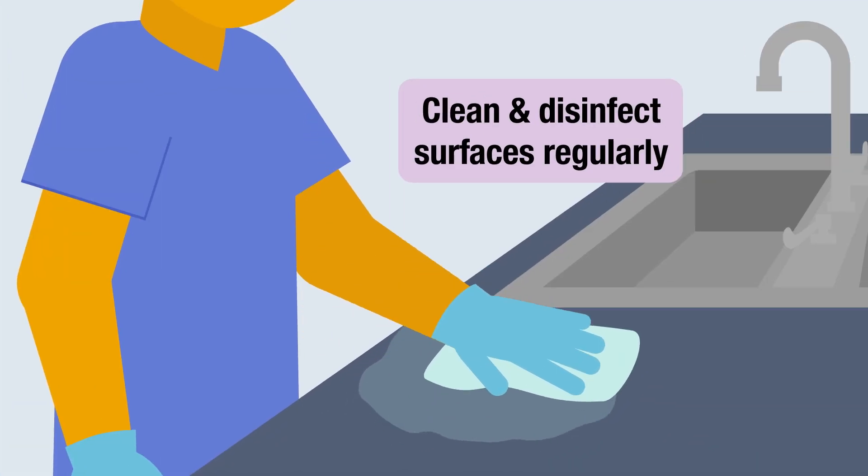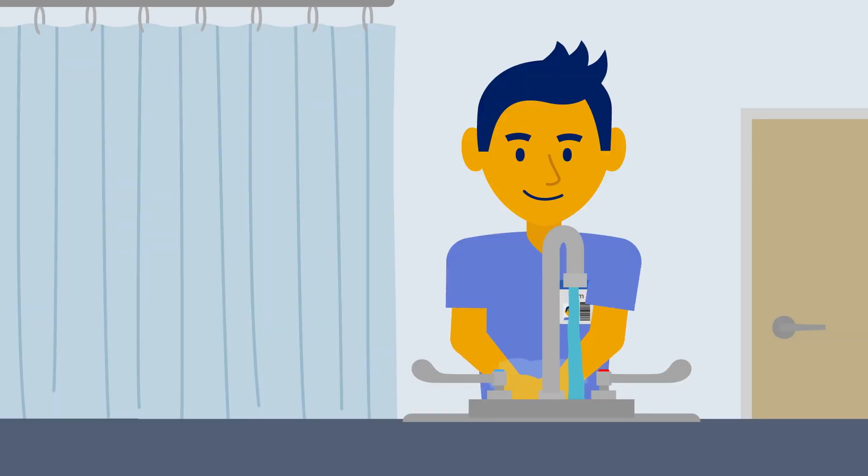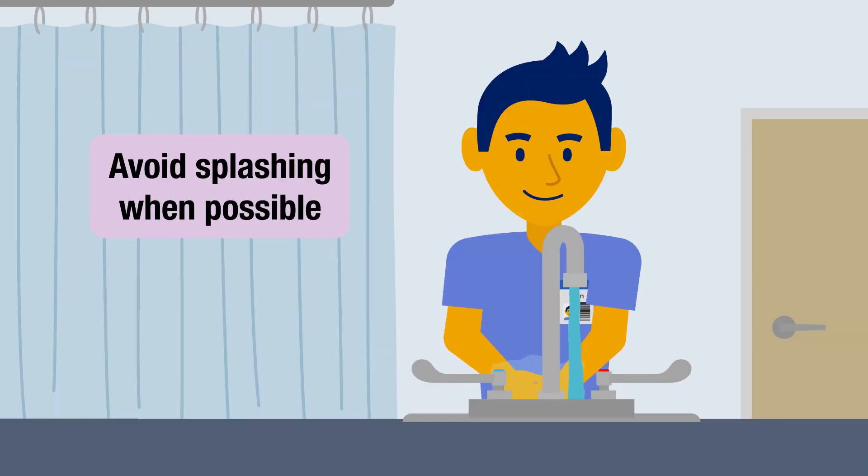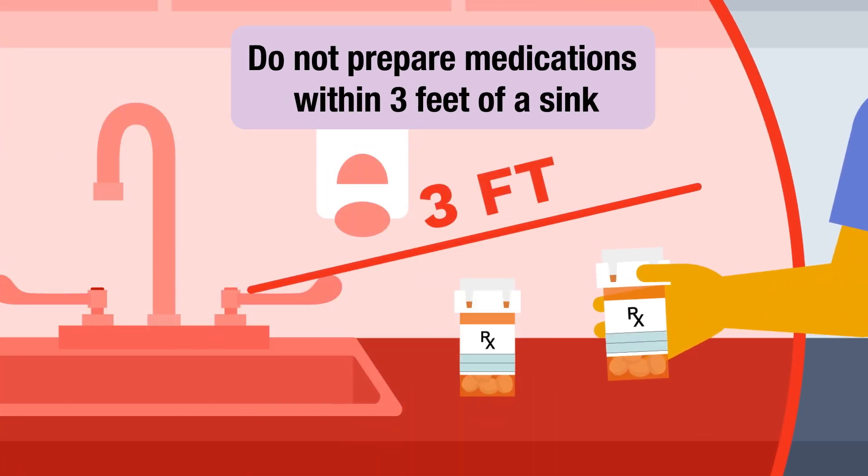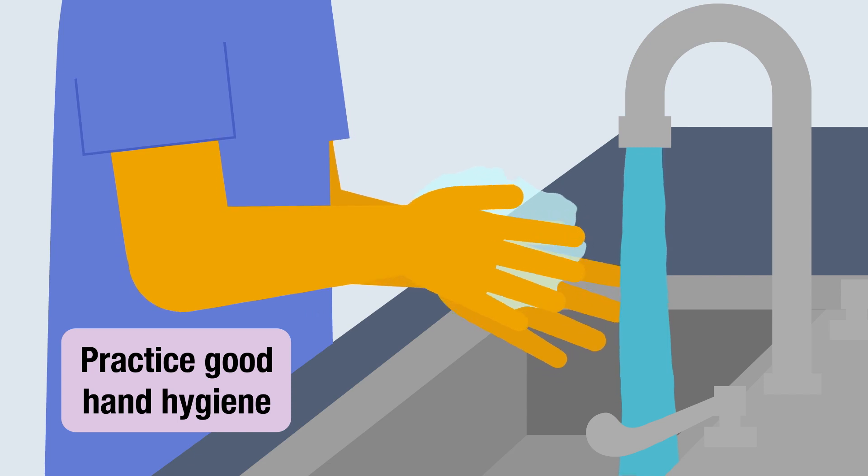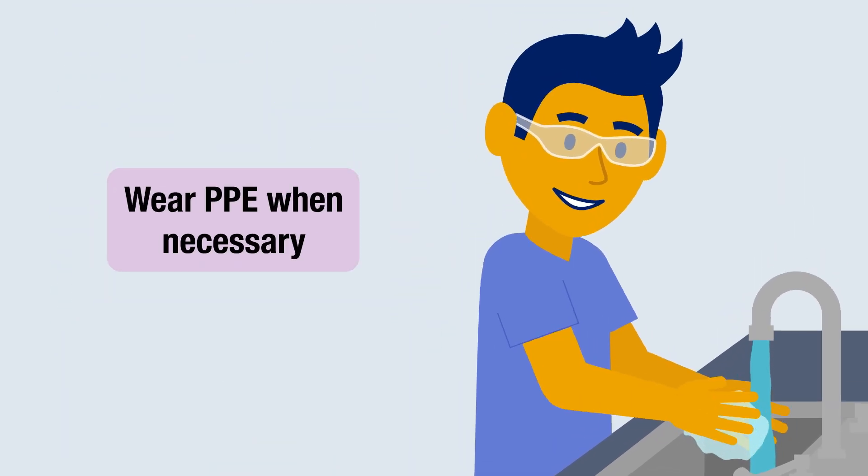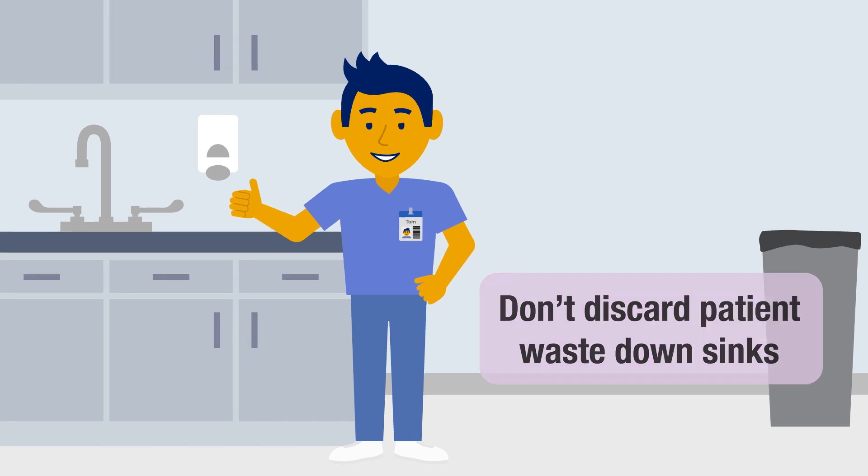Clean and disinfect splash zone areas and sinks regularly. Avoid placing patient care items on counters next to sinks. Use the sink carefully and avoid splashing water unnecessarily while cleaning. Do not prepare medications within three feet of a sink unless a splash guard is installed. Practice good hand and personal hygiene. Wear personal protective equipment when necessary. And never discard patient waste down sinks.